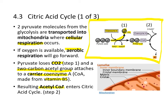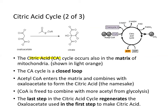The resulting acetyl-CoA is what enters the citric acid cycle, named after citric acid. It occurs in the matrix of the mitochondria, and it's a closed loop — meaning it regenerates the oxaloacetate used in the first step. The acetyl-CoA combines with oxaloacetate to form citric acid, and coenzyme A is then free to combine with more acetyl groups. The last step of the cycle regenerates the oxaloacetate.